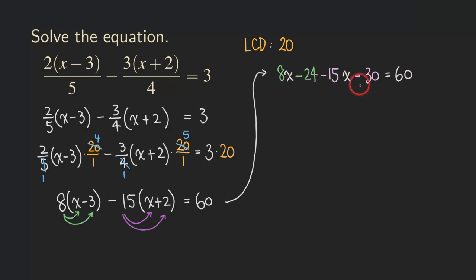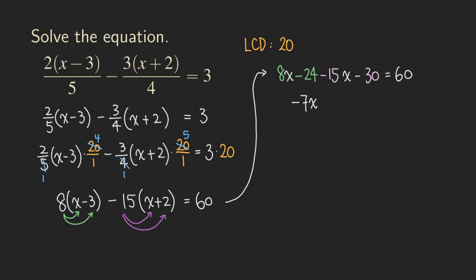The next step is to combine like terms on the left-hand side. For the right-hand side, we just leave the 60 as there are no other terms. Combining: 8x minus 15x gives us negative 7x, and negative 24 minus 30 gives us negative 54. So we have negative 7x minus 54 equals 60.